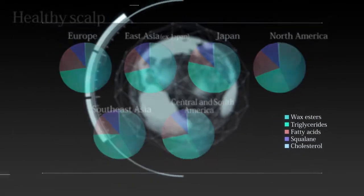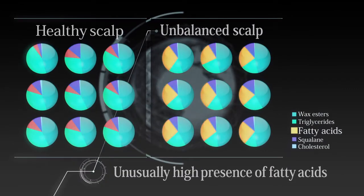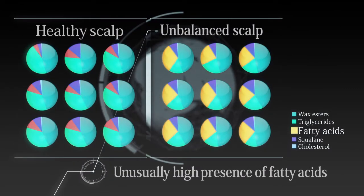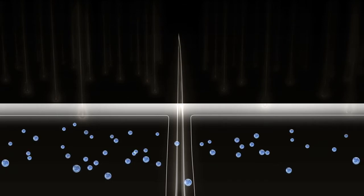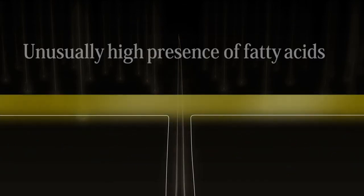We found that scalps which are prone to problems have a higher occurrence of fatty acids. The scalp naturally produces sebum for protection and to retain moisture, but when there are too much fatty acids in it, problems can arise.